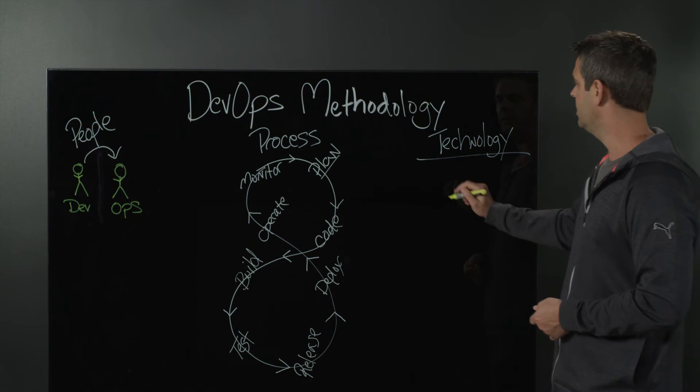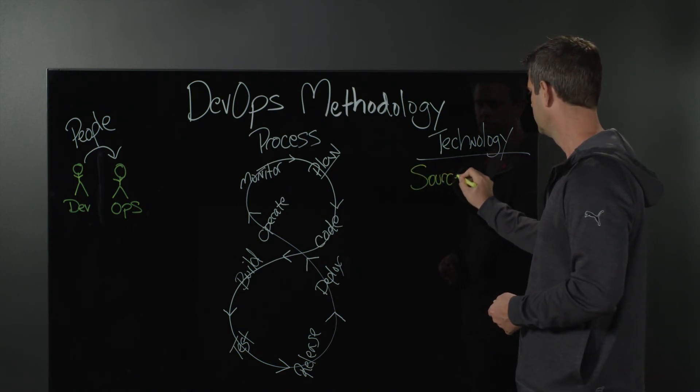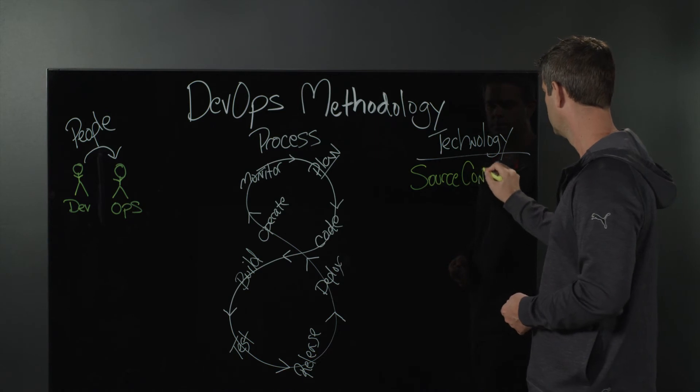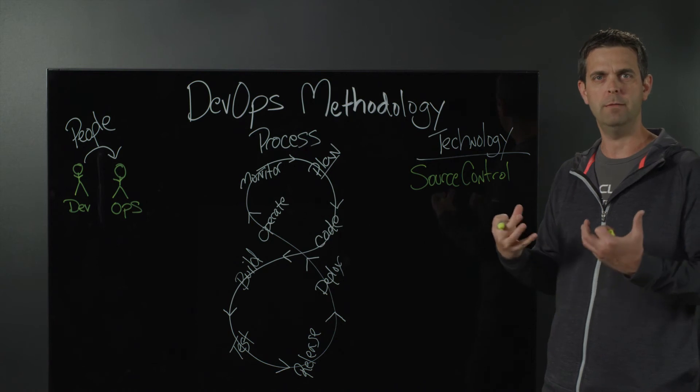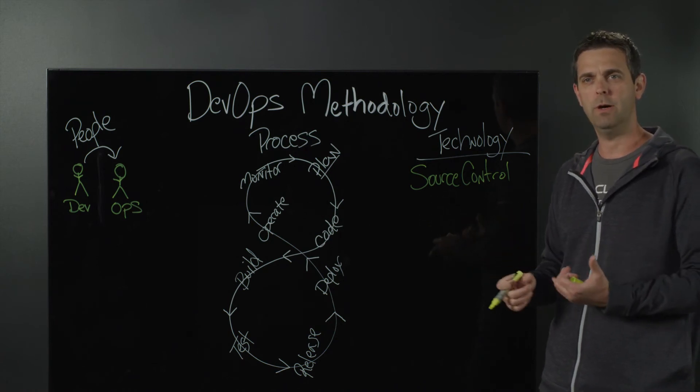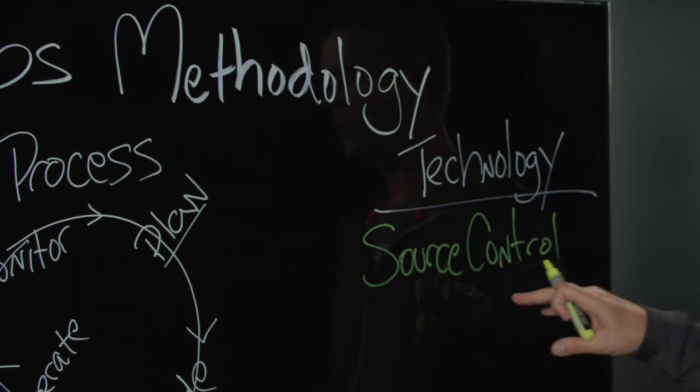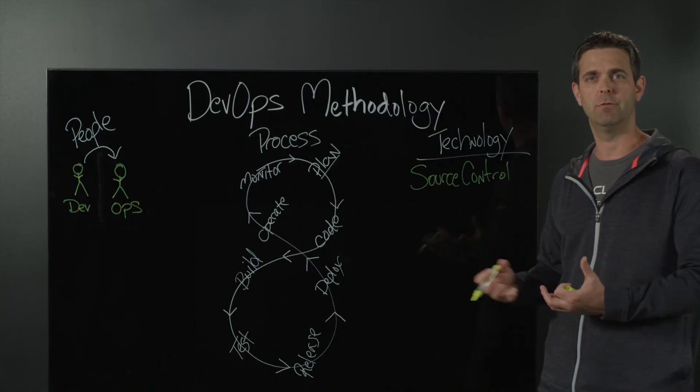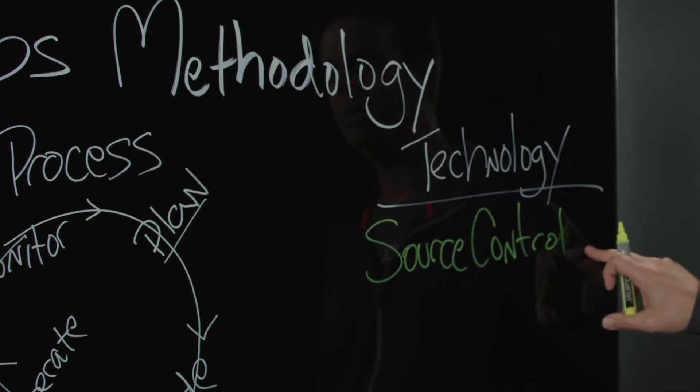One of the first pieces here is going to be source control. We need to make sure that all the code we're writing is stored in a central repository that has access control, audit control. We want to make sure that all of our folks have access to the central repository, that we can manage and monitor what's happening in the ecosystem here.